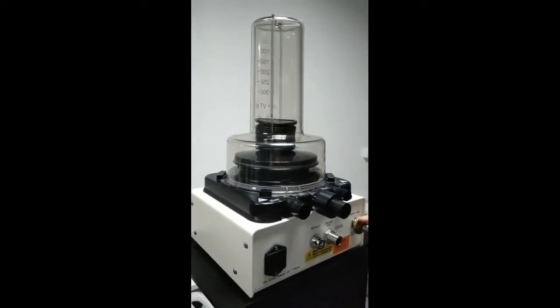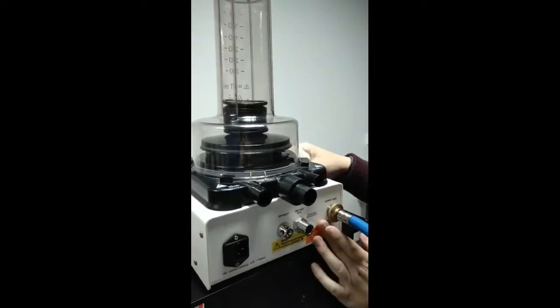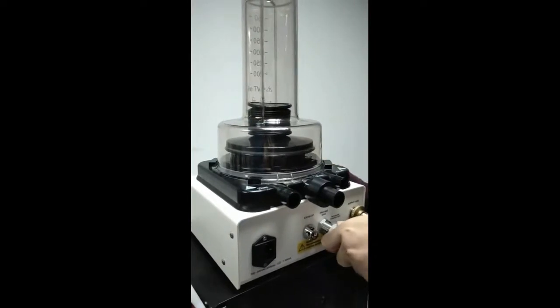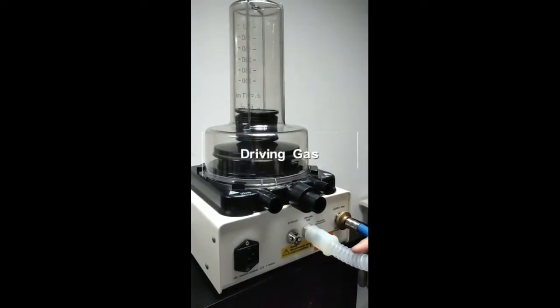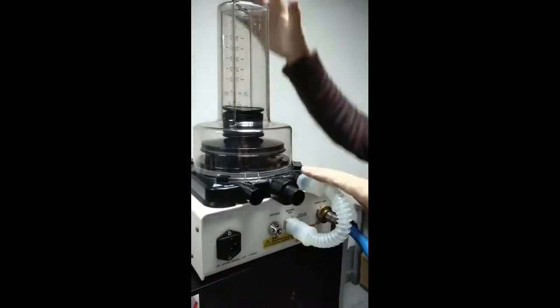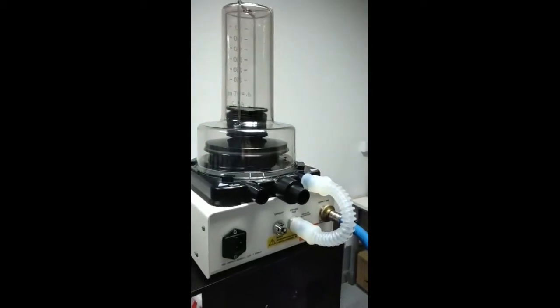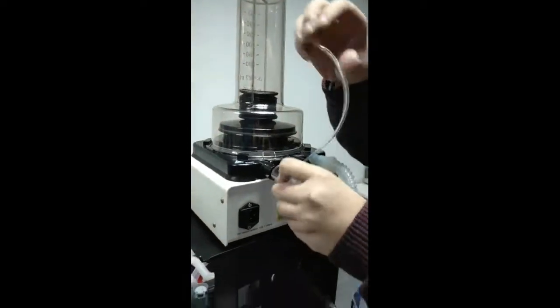The driving gas goes into ventilator through this hose and then it will be regulated by the ventilator. The regulated driving gas will travel through this hose into this plastic cylinder. Then we are going to fix this connector.